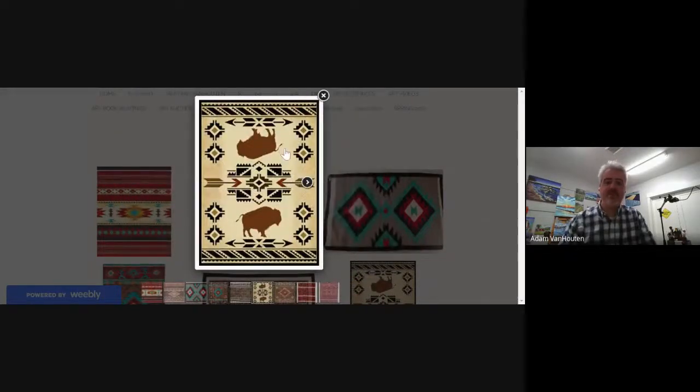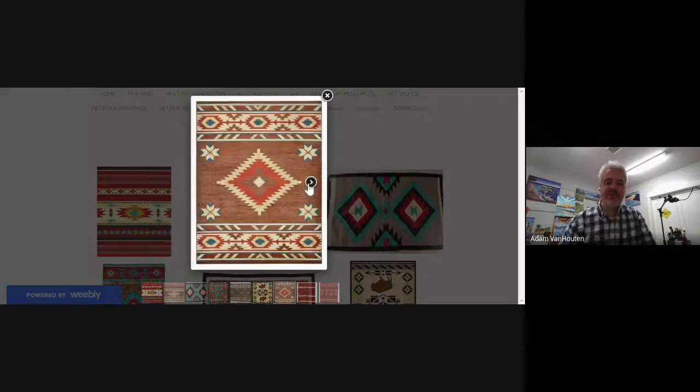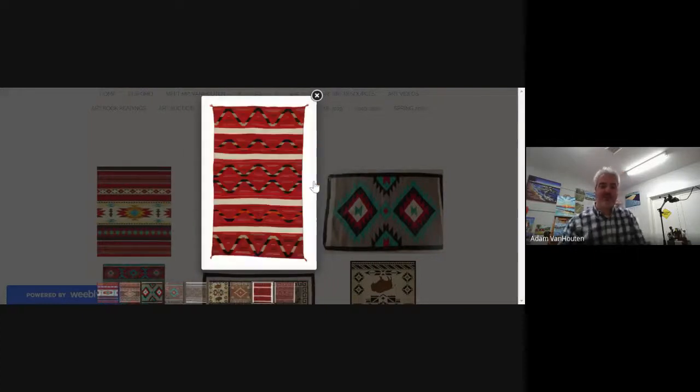You can see the buffalo. Sometimes they would have pictures in there. So they would use these rugs for a blanket. They might put them over their horse. They might cover themselves up and they would use it for some kind of blanket.